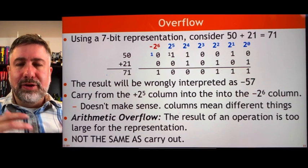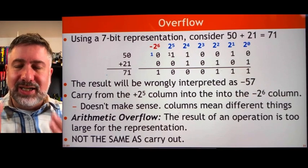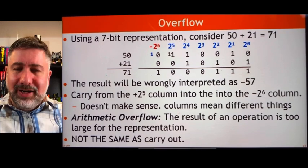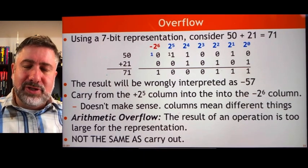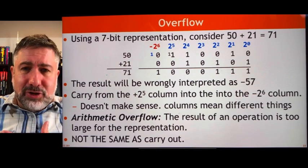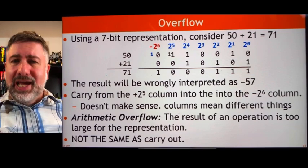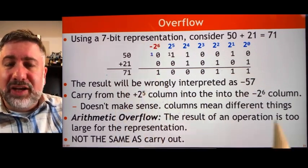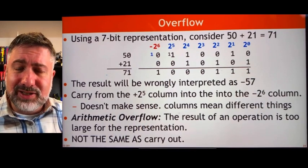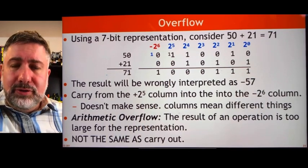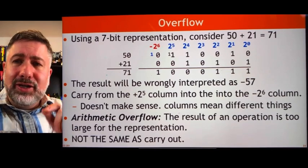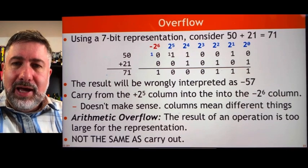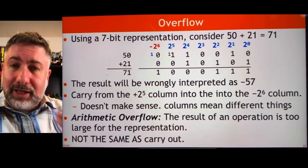Overflow happens when the result of an operation doesn't fit in the size of the representation. You might think you've already seen this with carry out — you can add numbers together and if the carry out of the top is too big, you have an extra bit. But we can't just have an extra bit in two's complement, because the negative place value would be in a different place. So we want to look at the cases where adding two numbers together doesn't give us the correct result, and try to identify where that happens.